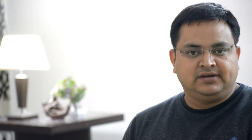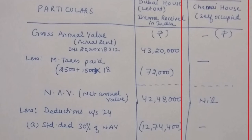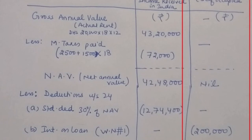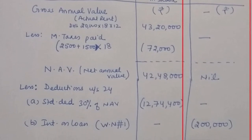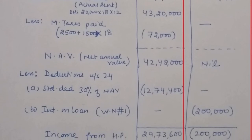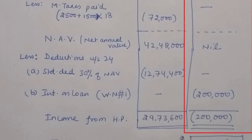For the Chennai column, directly write NAV as nil (zero). You don't start with GAV and municipal taxes here, so put dashes. NAV is zero, standard deduction 24A will automatically be zero. For 24B, you need to calculate interest and show the workings clearly. Prepare a working note — Working Note 1 — to solve this.